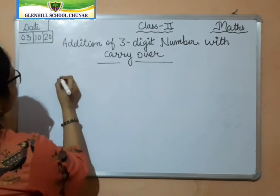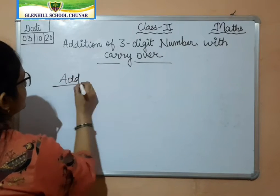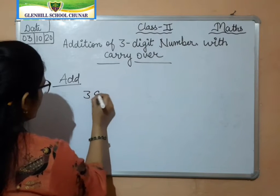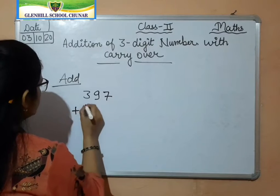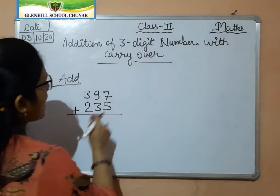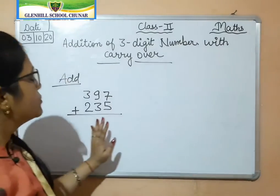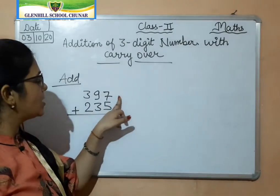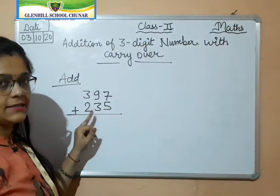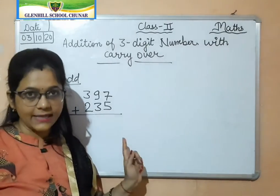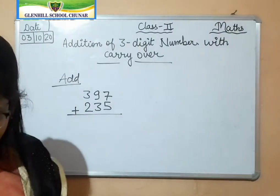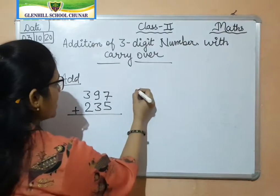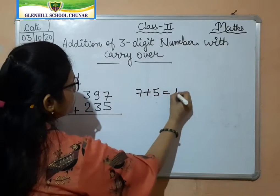Now let's see — let's suppose we have to add 397 plus 235. We have to add these two numbers. So what you are going to do? You have to add ones with ones, tens with tens, and hundreds with hundreds. Like this only you are going to add. So first, ones with ones: 7 plus 5. 7 plus 5 equals how much?